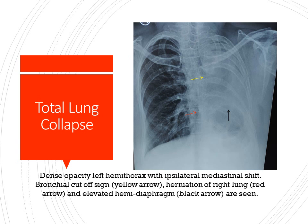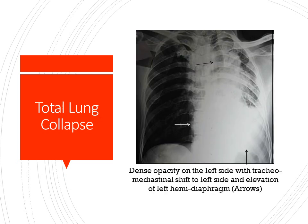In total lung collapse, the whole lung is collapsed due to obstruction in the main bronchus — here the left main bronchus. You can see a dense opacity with mediastinal shift towards the left side, and the right lung is herniating towards the left. A cut-off sign is visible in the left main bronchus, which is the area of obstruction producing complete collapse of the left lung, with elevation of the left hemidiaphragm. Another picture shows the same phenomenon: trachea and mediastinum shifted, herniation of the right lung, and elevation of the left hemidiaphragm.